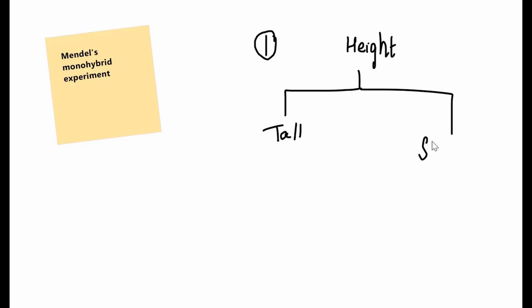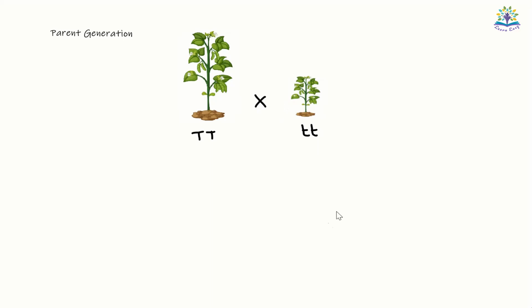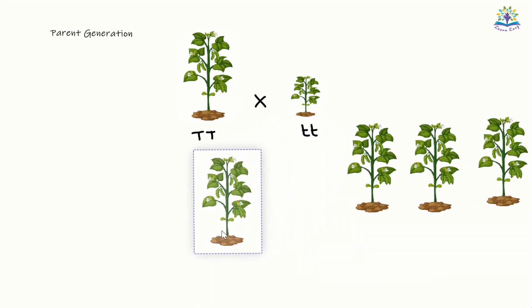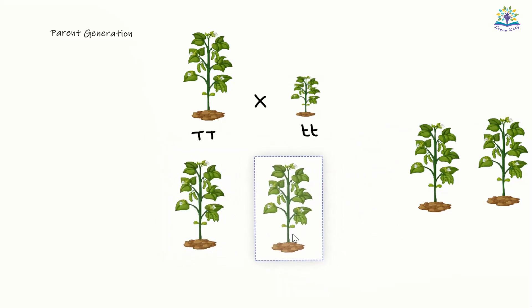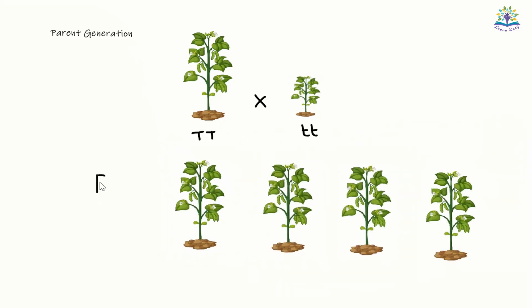Tall is the dominant allele, so we will represent it with the uppercase T. And short is the recessive allele, so we will represent it with lowercase t. In the parent generation, the cross-pollination is done with pure tall and pure short plants, which have genotype uppercase TT and lowercase tt. All the offsprings formed in the F1 generation were observed to be tall, so their phenotype was the same and all of them had the genotype uppercase T, lowercase t — that is, they had received one tall and one short gene from each parent.